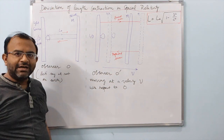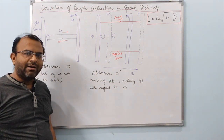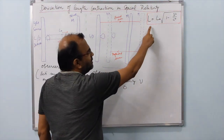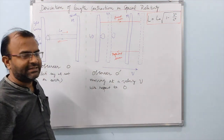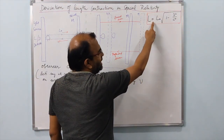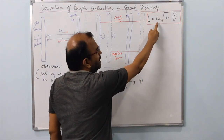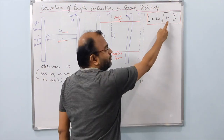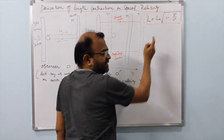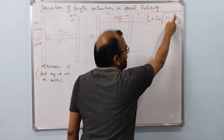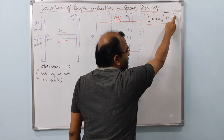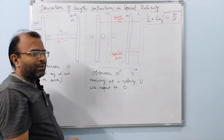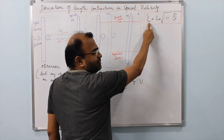Hello everybody. In this video I am going to derive the expression for length contraction in special relativity. The contracted length L is equal to the proper length multiplied by the square root of 1 minus v squared over c squared, where v is the relative velocity of the object in motion with respect to the observer who is measuring the contracted length.